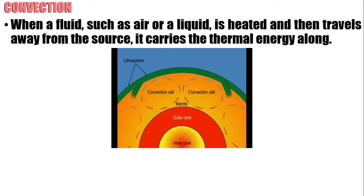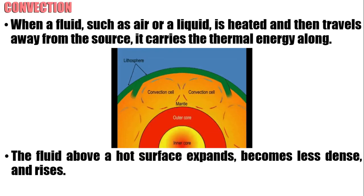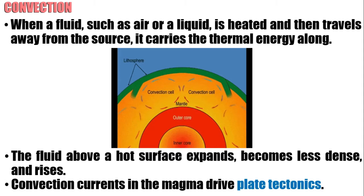Next, we have convection. Convection happens when a fluid is heated and then travels away from the source, carrying the thermal energy along. The fluid above a hot surface expands, becomes less dense, and rises. Basically, convection equals mass transfer. Remember that convection currents in the magma drive plate tectonics.